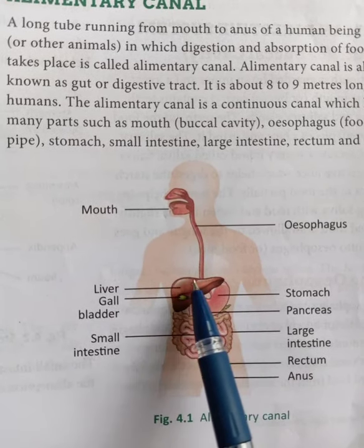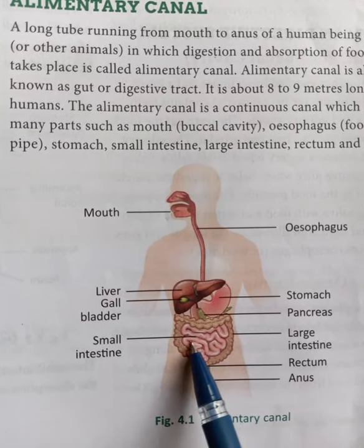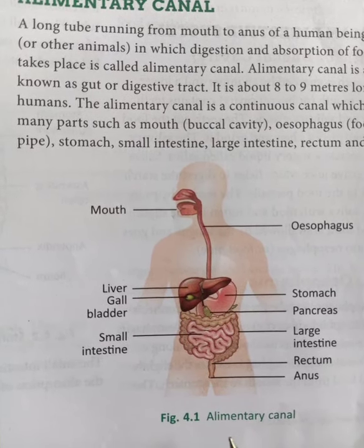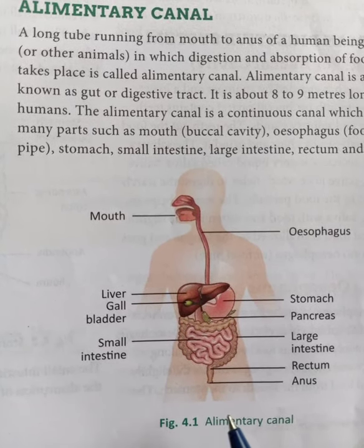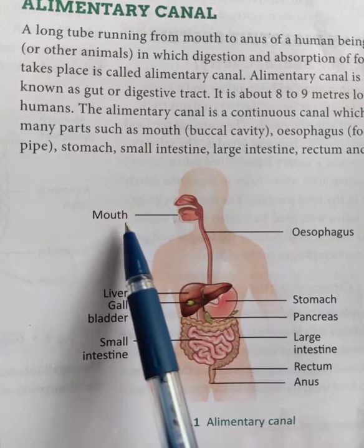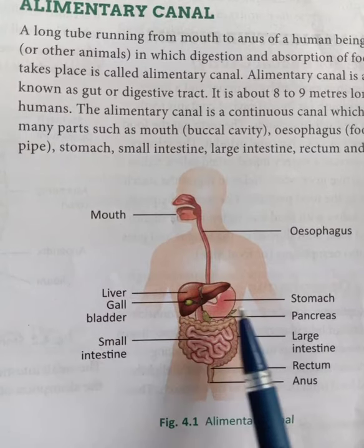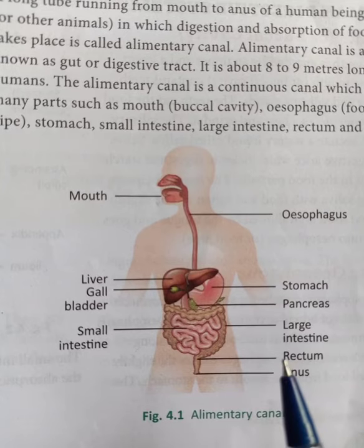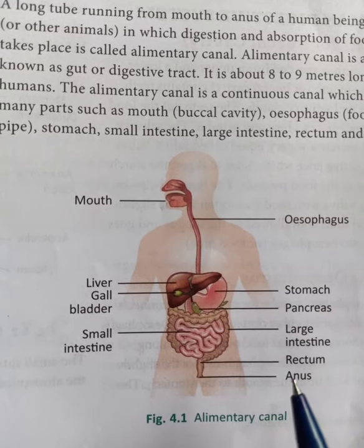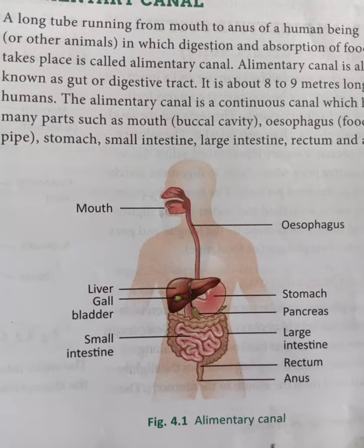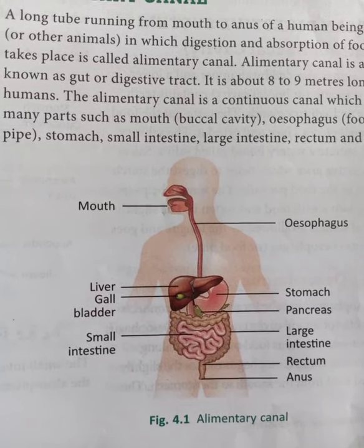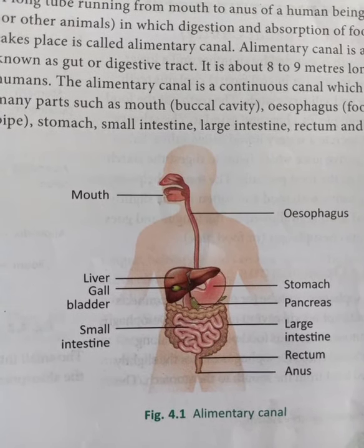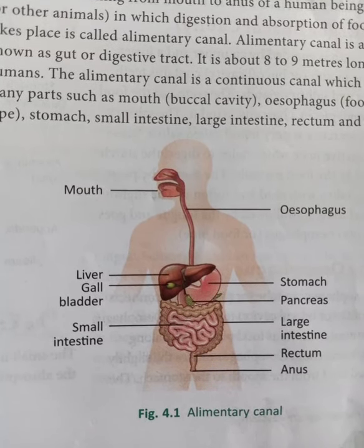You can see in the picture that different parts are there, and each part performs a function. Then the food comes out from the body. So in this chapter we are going to study what are the functions of different parts of the digestive system. The digestion of food takes place inside our body - now in which part of the body the digestion takes place, and how the digestion takes place, that we are discussing now.